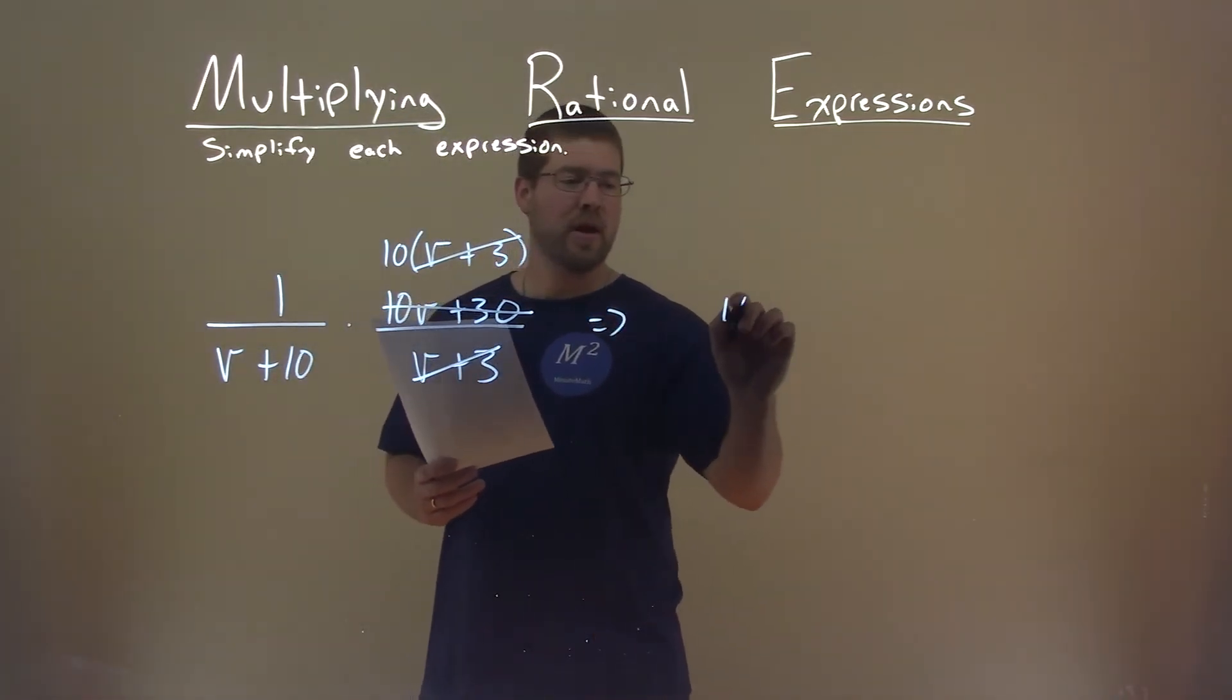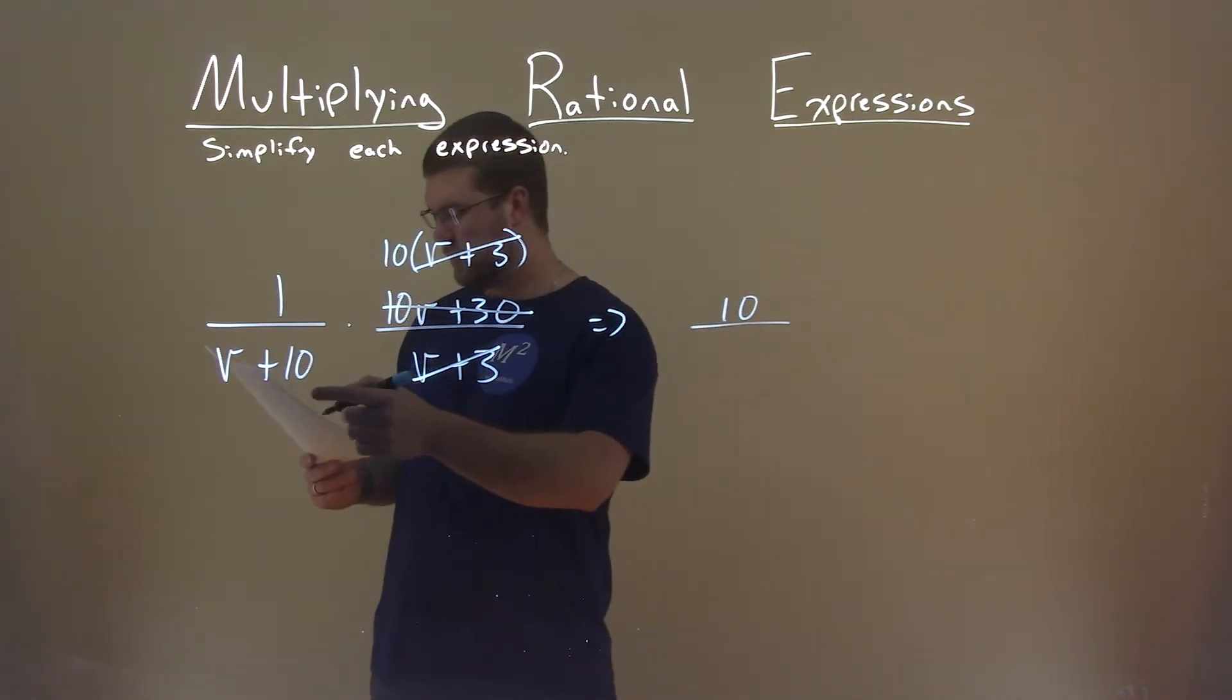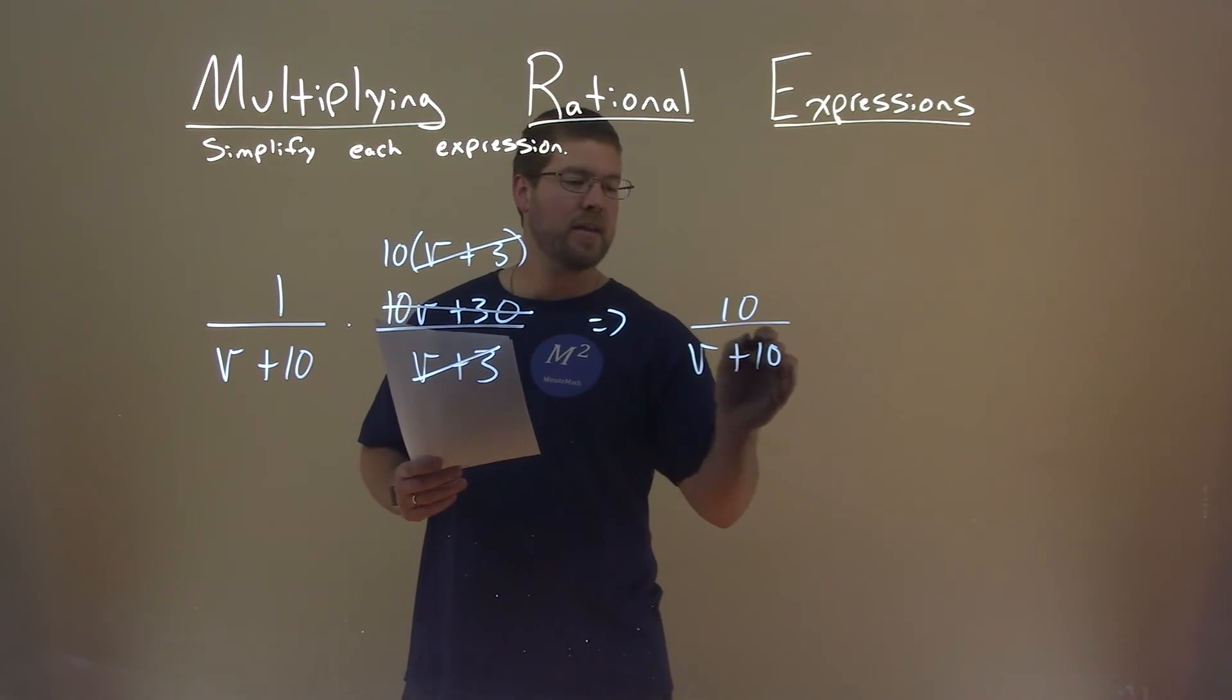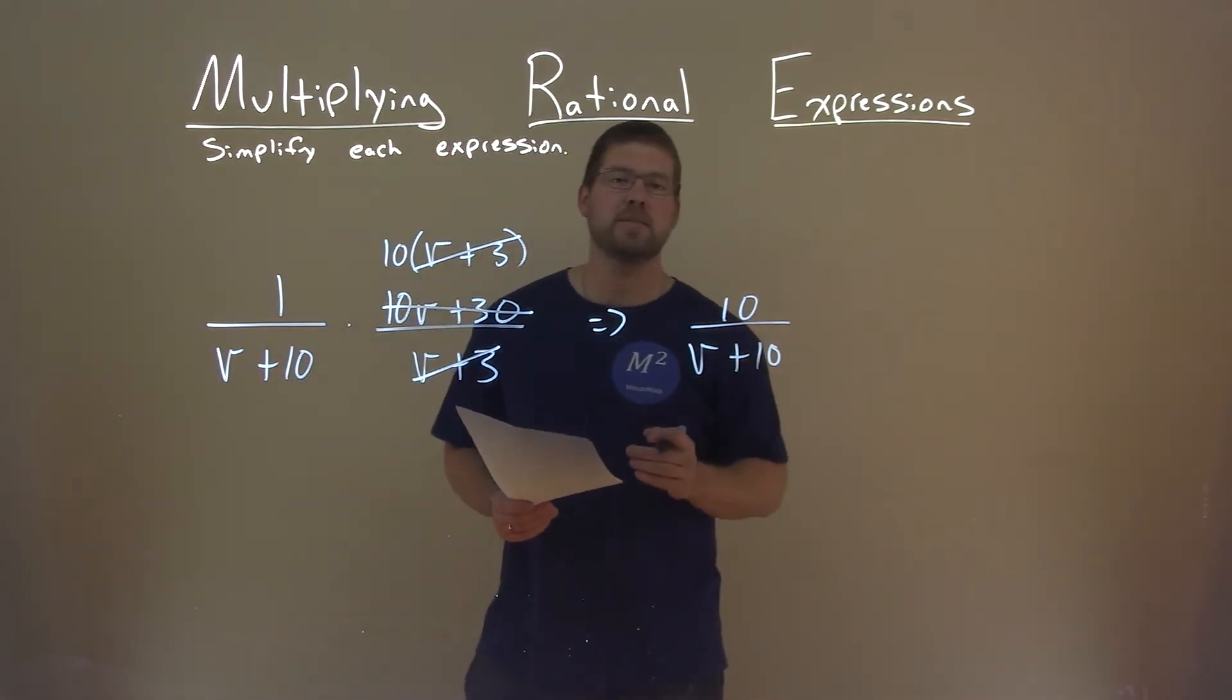So the numerator, I'm left with that 10, divided by v plus 10 in the denominator, and there we have it. 10 divided by v plus 10 is our final answer.